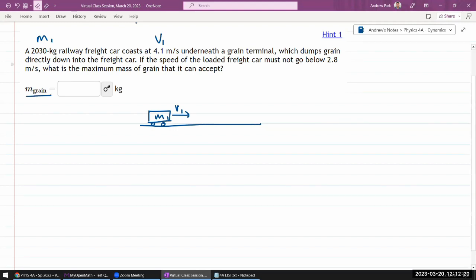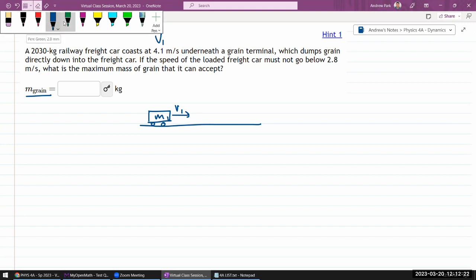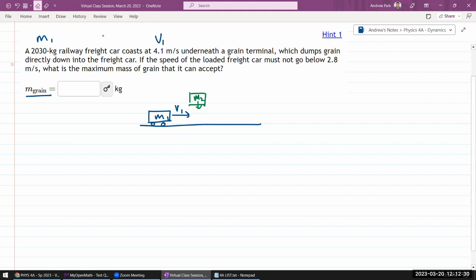So as it's moving, there's some kind of grain terminal that's dropping basically another mass, M2 or M grain, that's being dropped down. So we could say this has initial speed of zero. If the speed of the loaded freight car must not go below this speed, okay, let me call this V1 final.